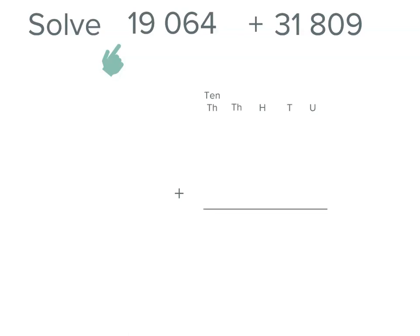We'll put some headings in. You don't have to, but if you're not very confident lining up your digits, it's a good idea to do that. We've got four units, six tens, no hundreds, nine thousands, and one in the tens of thousands place.